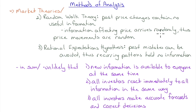Under random walk, information affecting price arrives randomly, so price movements are random. The third theory, the Rational Expectations Hypothesis, says past mistakes can be avoided, thus recurring patterns hold no information — so technical analysis is useless here too. All three theories agree technical analysis is useless, but only the EMH says fundamental analysis is also useless, and we found a contradiction: if everyone believed that, prices would become inefficient, since it's unlikely new information is available to everyone at the same time.